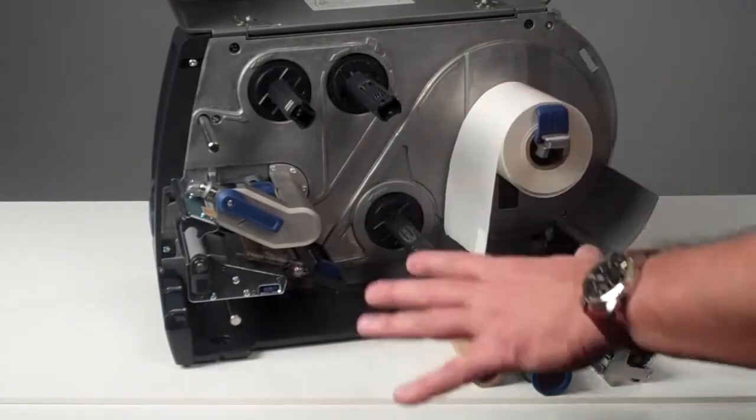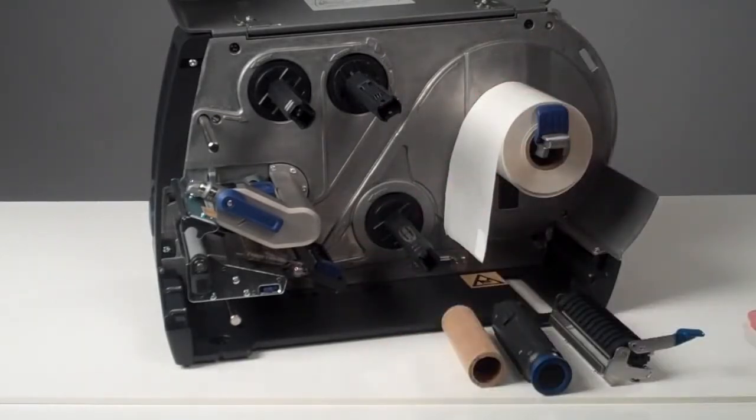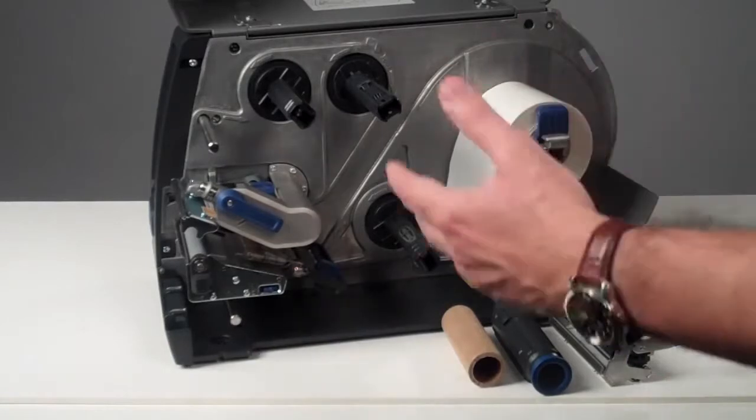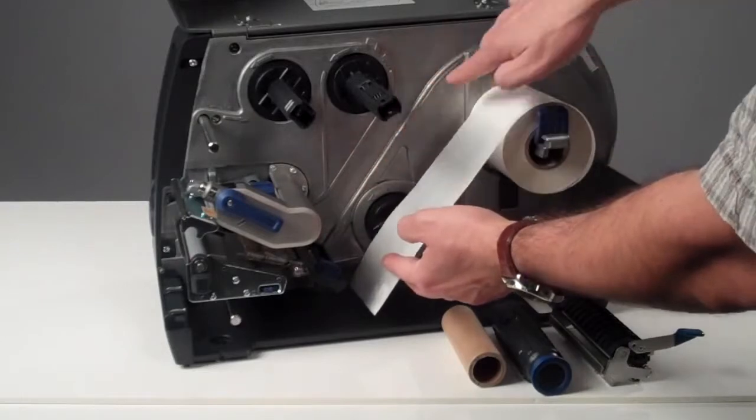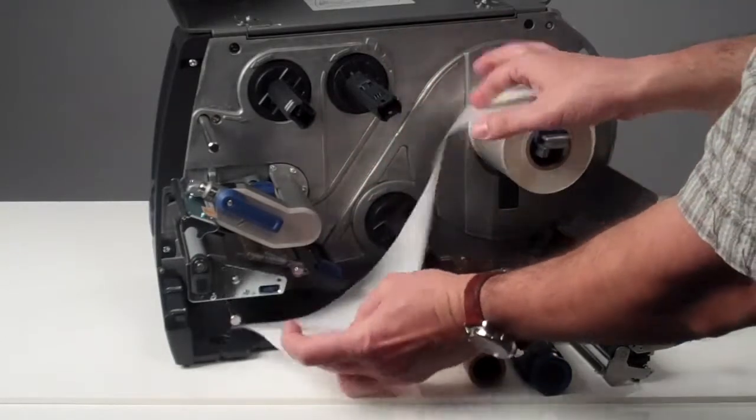The Intermec PM43 comes with a variety of different ways to rewind the liner and peel off or dispense the labels. To wind the label and liner in is very easy. I'll show you the different ways to do this.